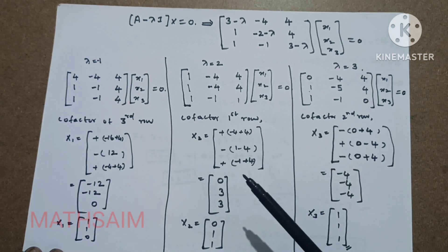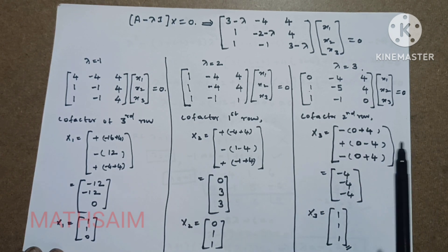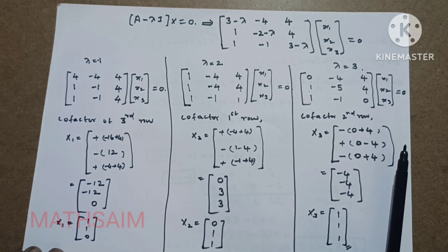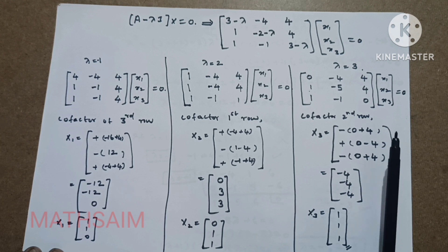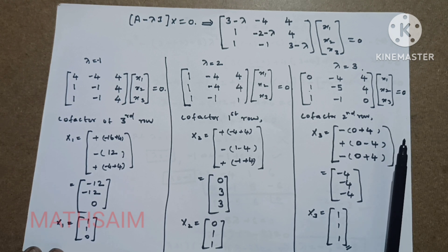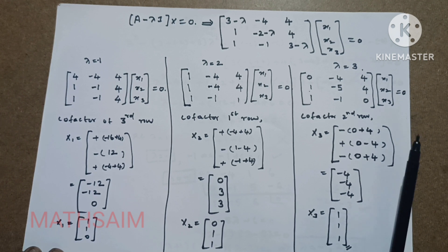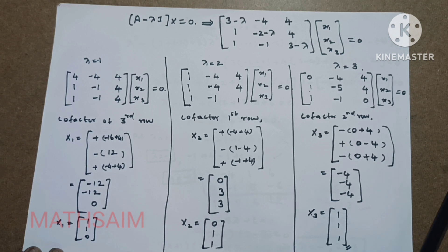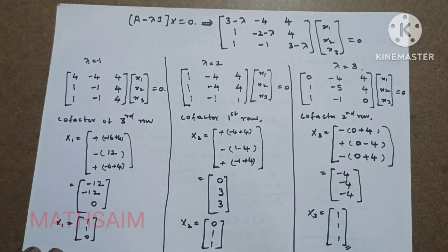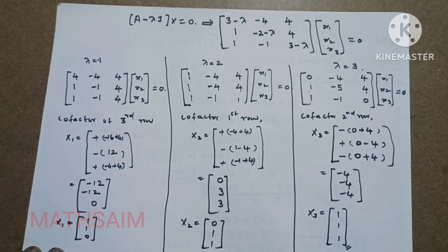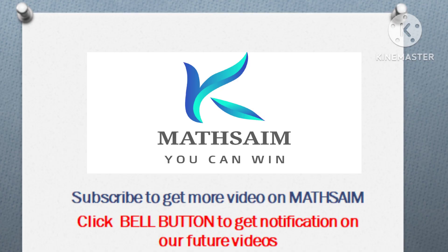One important thing: whichever row's co-factor you choose, make sure the remaining rows are non-identical. In case all three rows are identical, what do you do? That detail will be covered in the next problem. Thank you. The PDF document is available in the description for download.